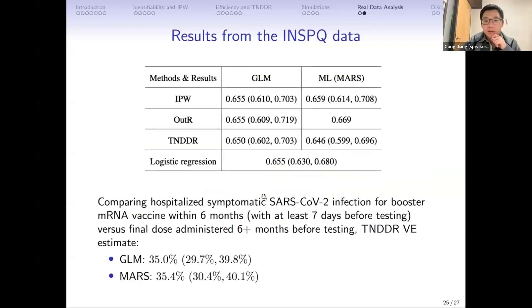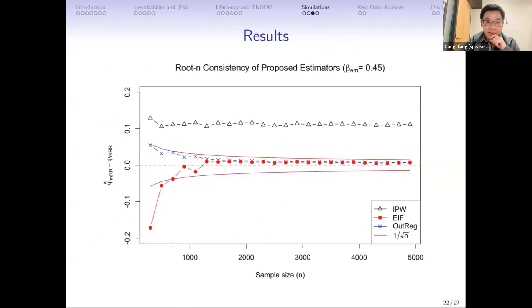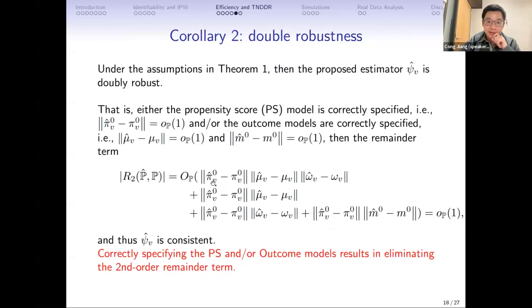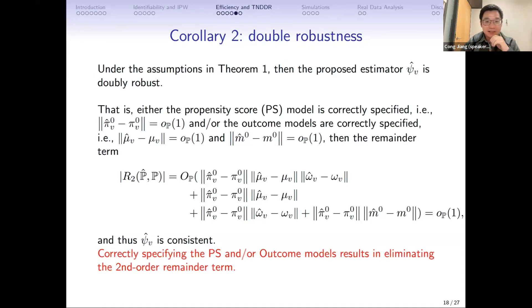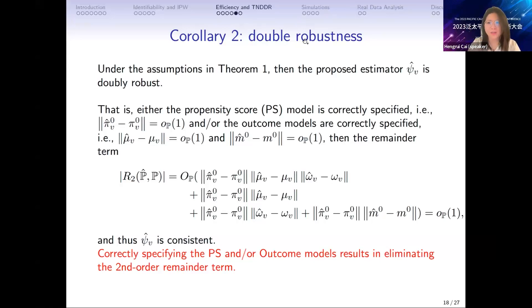Because we want the final small O_P(1/√n) result, it depends on the second-order remainder term. Each term has the pi model. If we just constrain the propensity score model to small O_P, times a big O_P term, the product is also small O_P. So we particularly require a stronger convergence rate for the propensity score model. For the big-O, it's just a bounded, more relaxed assumption. I see — that makes sense since they are shared components. Thank you.